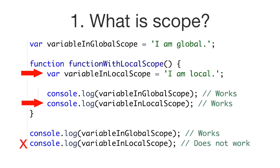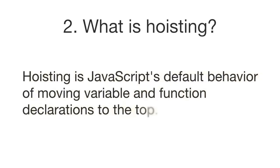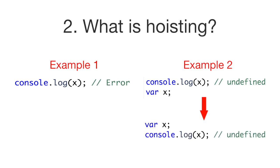Question number two: what is hoisting? Hoisting is JavaScript's default behavior of moving variable and function declarations to the top. In the first example, because the variable X has not yet been defined it produces an error. In the second example, even though we are console logging the variable X before it is defined, the var X declaration below gets hoisted to the top, so it actually behaves like this — that's why X is merely undefined and does not produce an error.